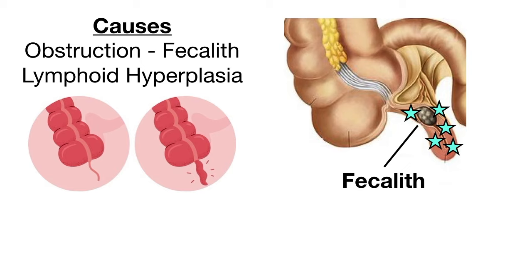The lymphoid follicles can also grow in size whenever we're fighting off infection involving the intestines. So if we're dealing with a viral or bacterial infection of the gut, the lymphoid follicles of the appendix can grow in size and potentially obstruct the appendix, and this too can lead to appendicitis.